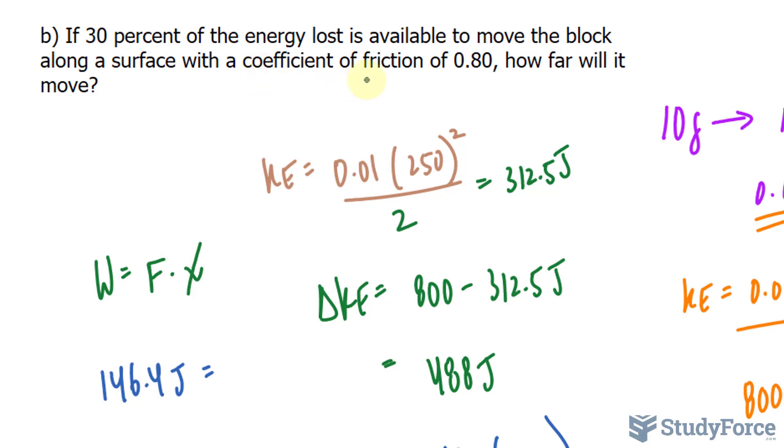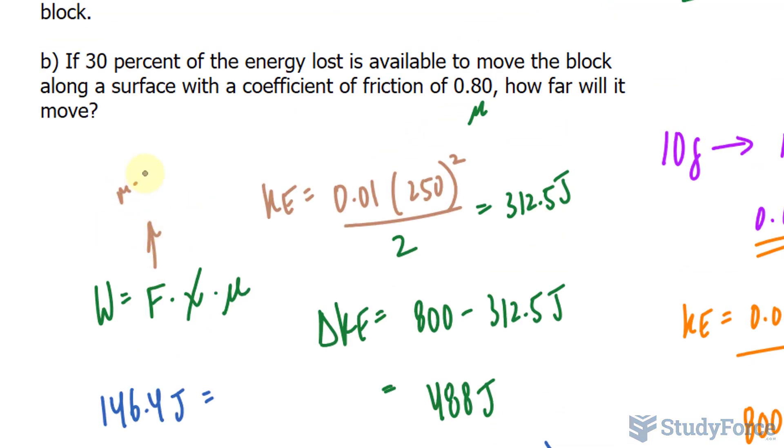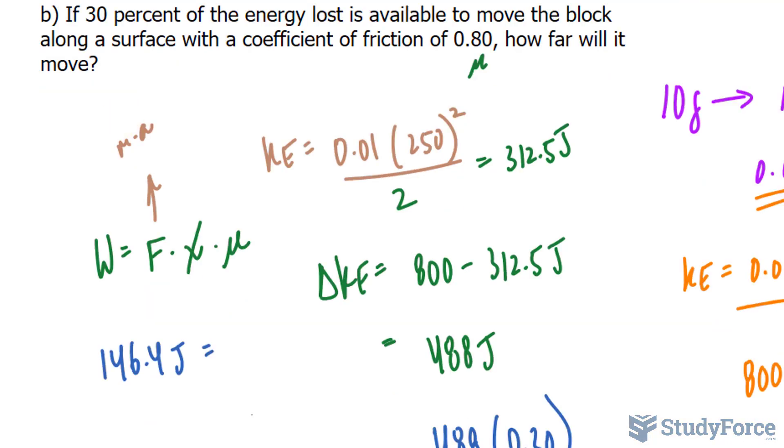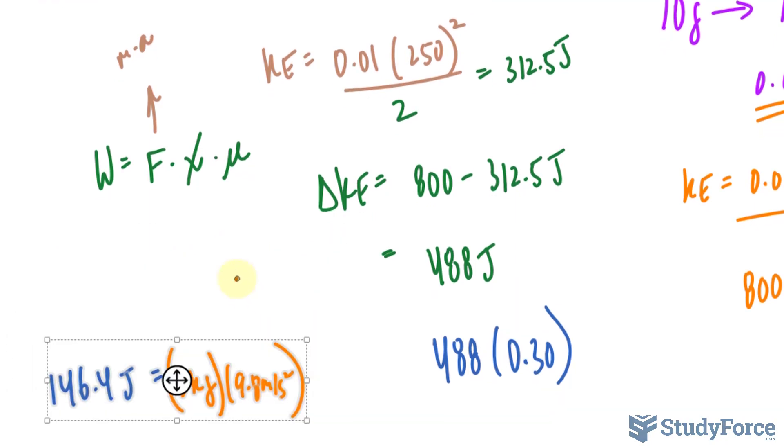Now, this mass sits on a coefficient of friction of 0.80. Therefore, we need to multiply this by 0.80. Normally, we represent this as mu. So we multiply the work times mu. And that should help us find out what x is. The force can be calculated using mass times acceleration, and the acceleration is due to gravity. So the mass of the object was 3 kilograms, and the acceleration due to gravity is 9.8 meters per second squared. I'll move this expression so that we have more room. Multiply to x, and that's being multiplied to mu, which is 0.80. That's unitless.